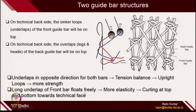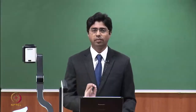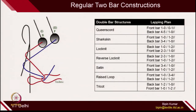The second aspect is long underlap. If you have a long underlap of the front bar, it can float on the technical back side, due to which you will get more elasticity of the structure, and there will be curling on the top and bottom side of the fabric towards the technical face. We will see how the positioning and magnitude of overlaps and underlaps, as well as the threading with respect to back and front guide bar of the warp beams, influence the fabric properties.